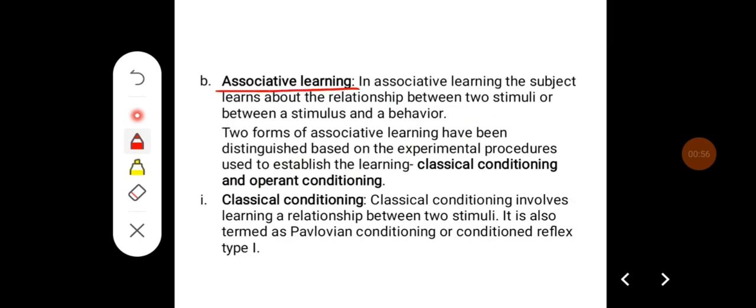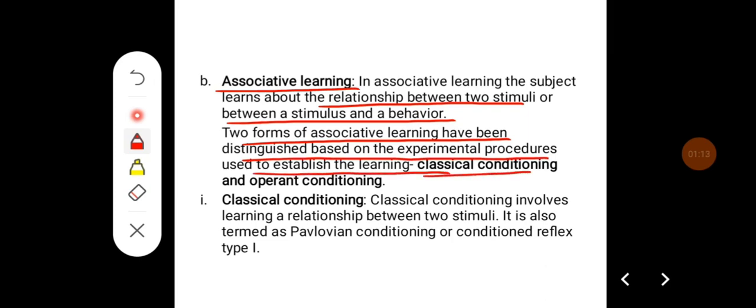In associative learning, the subject learns about the relationship between two stimuli or between a stimulus and a behavior. Two forms of associative learning have been distinguished based on the experimental procedures used to establish the learning: classical conditioning and operant conditioning.